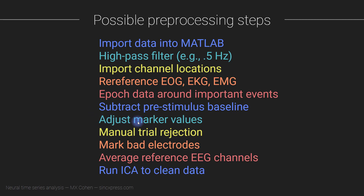You might also need to adjust the marker values — the particular values in the dataset coming from TTL pulses that indicate when specific events happen. For example, you might want to categorize each trial according to what the subject did or how the participant responded on the next trial. This is something that is highly, highly study-specific.